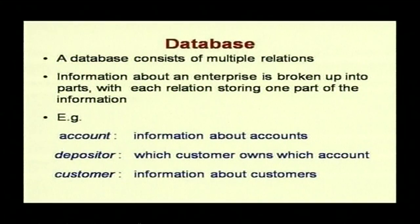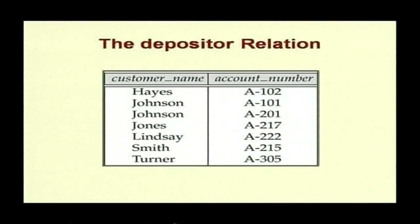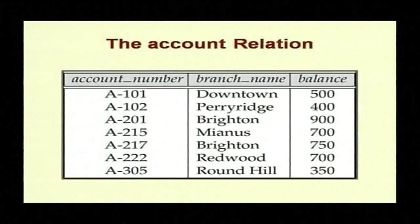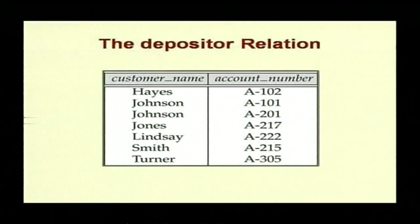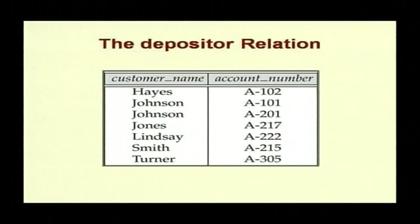We saw three tables: account, depositor, and customer. The account relation has three fields or attributes: account number, branch name, and balance. The depositor relation has customer name and account number. These two tables are connected through the account number. The customer relation has customer name, customer street, and customer city, and it is connected to the depositor relation through the customer name field.